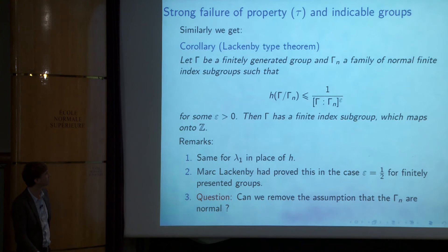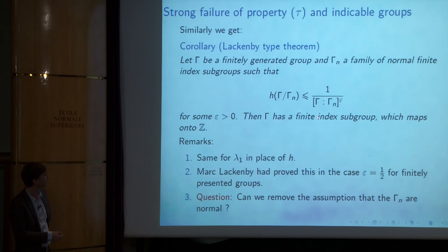This is basically an observation — we don't have a nice program like Lackenby's to use it further. An interesting question is: can we get rid of the assumption that the subgroups gamma_n are normal here?